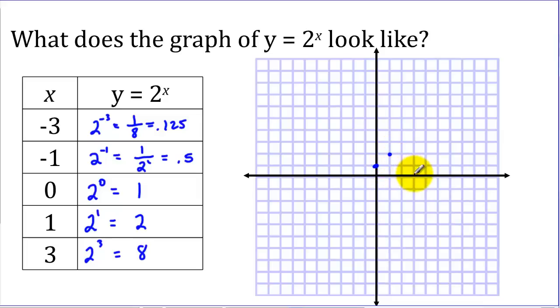And at x equals 3, we were up at 8. And at negative 1, we were 0.5. And out here at negative 3, we were 0.125. And again, it's not going to ever equal exactly 0, but it's going to get closer and closer.